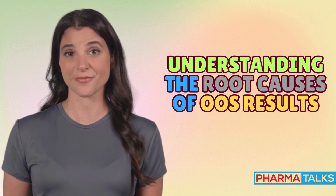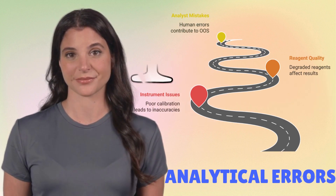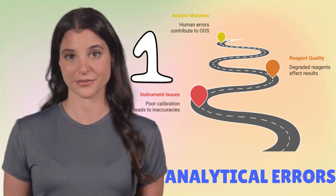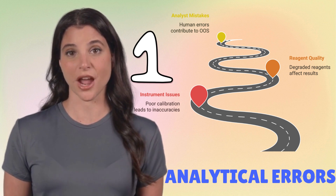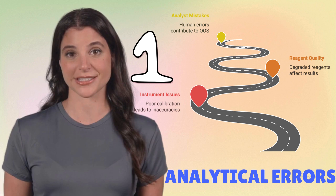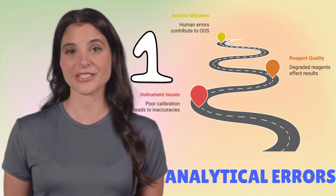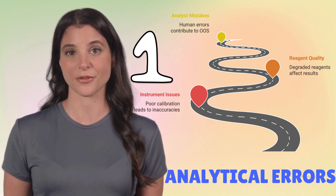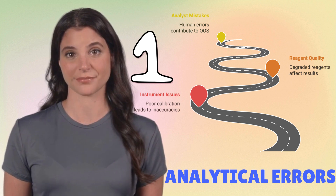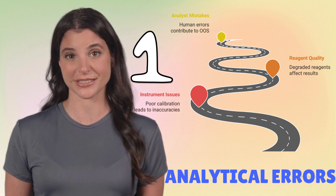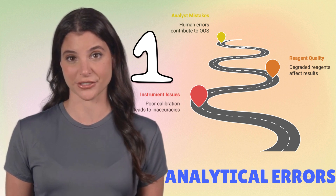Let's explore the five main reasons why OOS results occur. Reason 1: Analytical Errors. The first and perhaps most common reason for OOS results is analytical errors in the laboratory. These errors can stem from multiple factors, including instrument issues — poorly maintained or improperly calibrated instruments can produce inaccurate results.